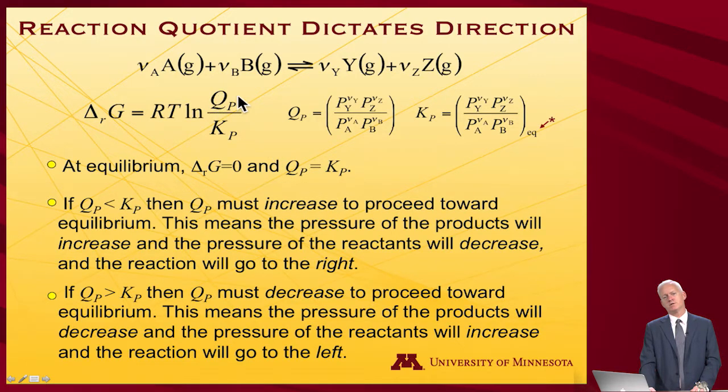Now what about the case when Q sub P is less than K sub P? Well, in that case, I'll have a log of a number less than 1. That will be a negative value. So R and T are positive constants. So it predicts that delta G will be negative.